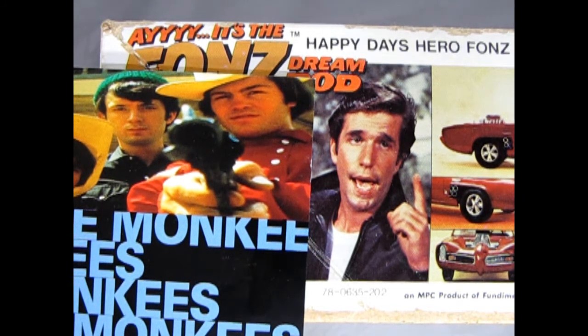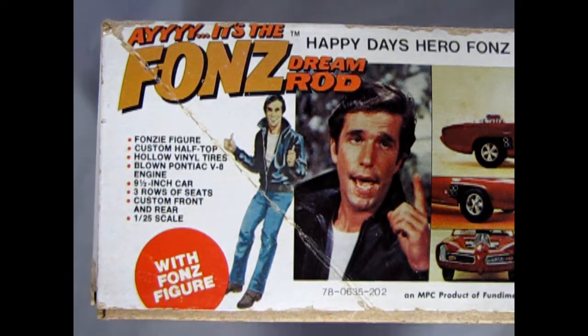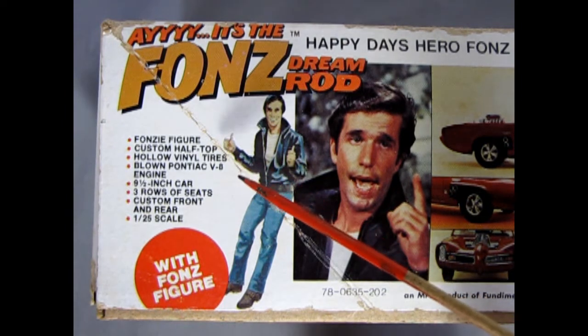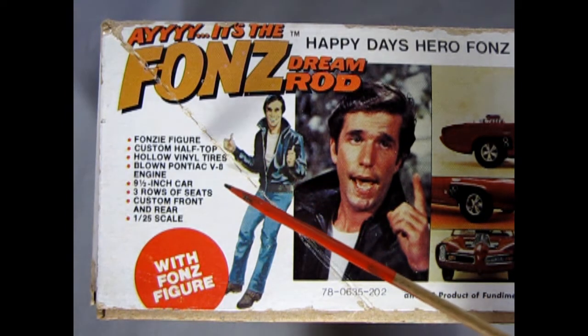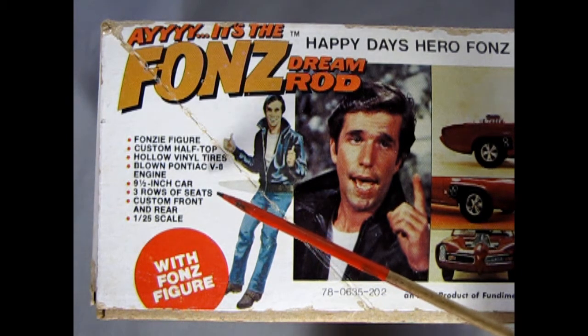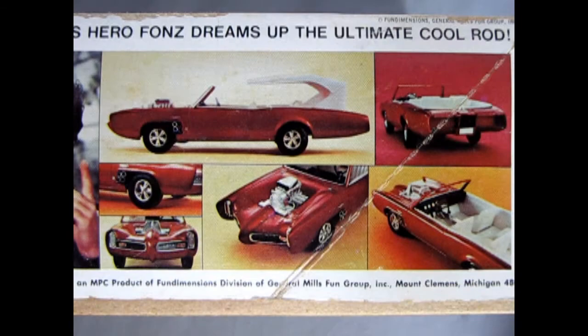Here we have what's on the side of the box: a Fonzie figure, custom half top, hollow vinyl tires, a blown Pontiac V8 engine. The model is nine and a half inches long, has three rows of seats, custom front and rear, and it's 1:25th scale.